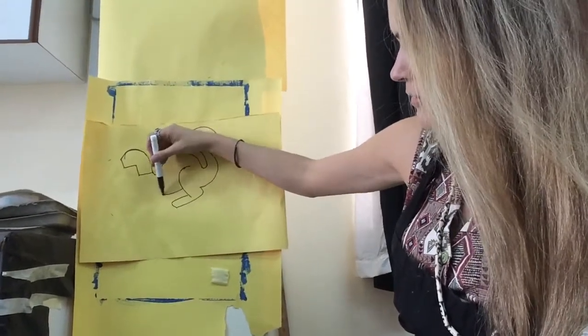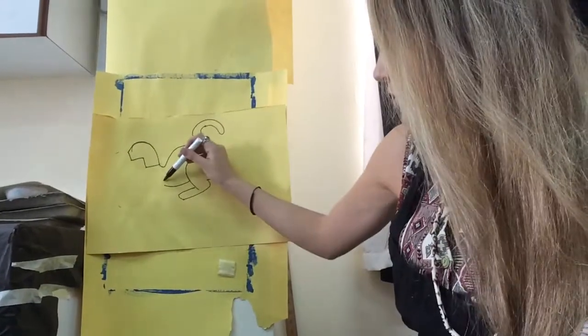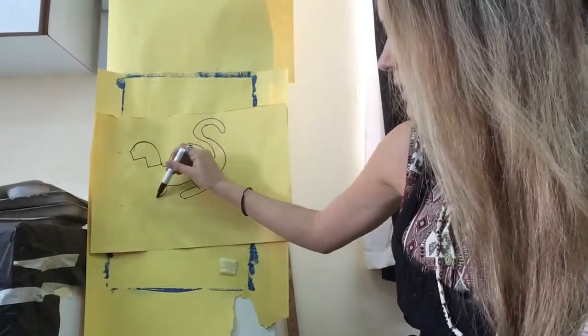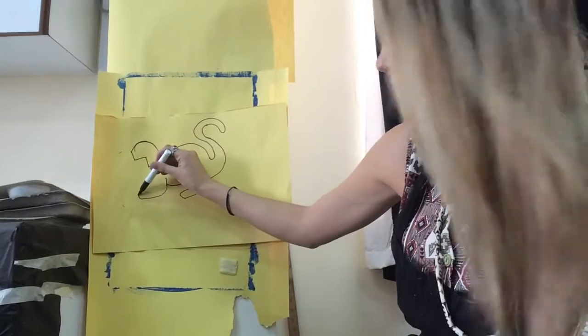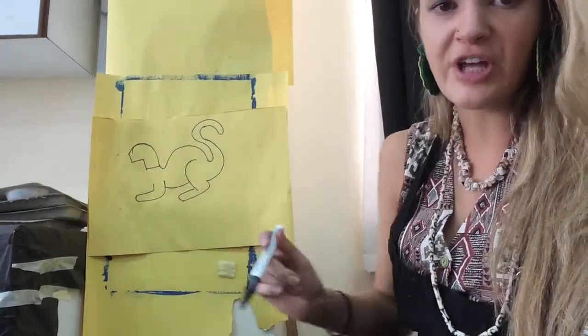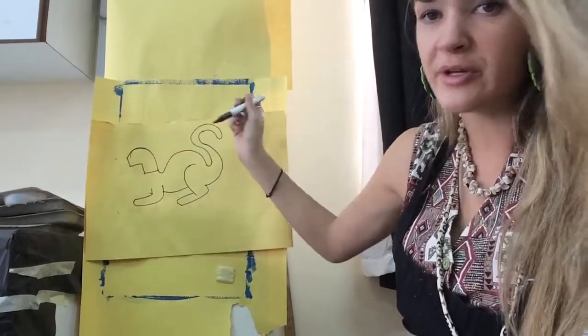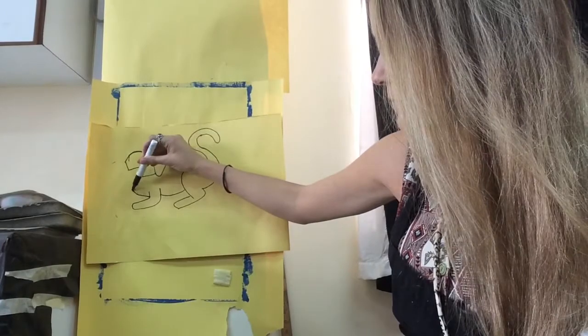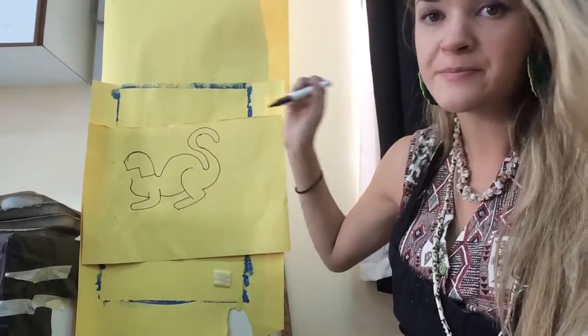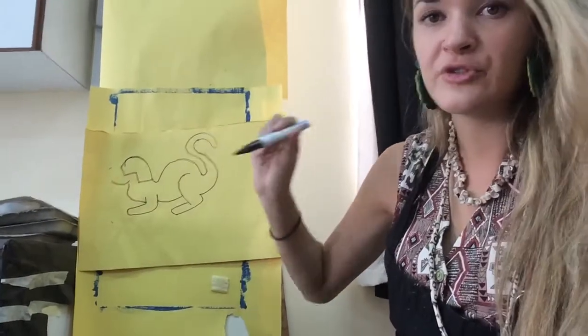Now I'm going to do the stomach, which curves like this. Then the cat's front leg, coming out like this, and then back in. Now we'll do the cat's chest, the front of the cat's body, from this point. Curve up like that, and then out to do the kitty's face.